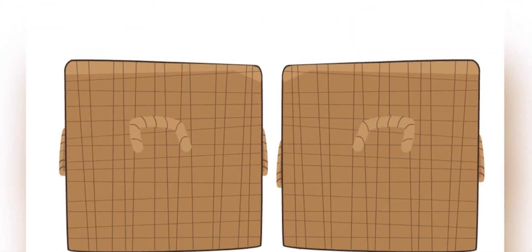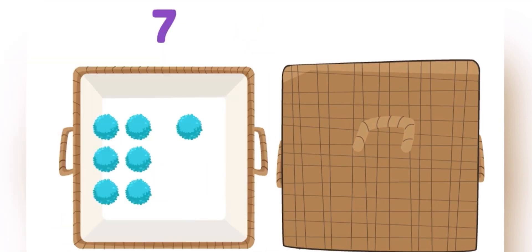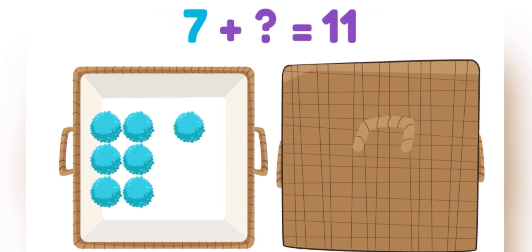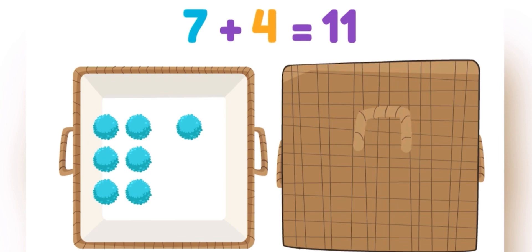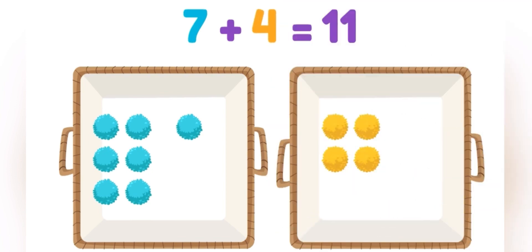Let's try something else. Now there are seven pom-poms in this container, and I don't know how many there are in this container. But I do know there are eleven total. Seven plus what equals eleven? Hmm... Seven plus four equals eleven! Let's check by counting. Seven, eight, nine, ten, eleven!